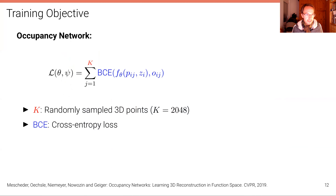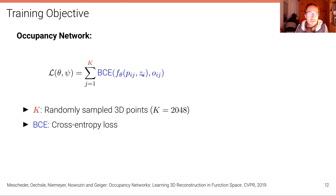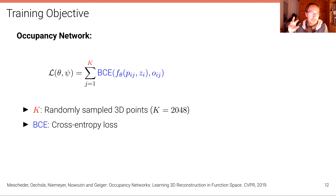Because this is a simple classification problem, the loss is a standard binary cross-entropy loss that compares the network's prediction for a latent condition C — the image code — and a particular 3D point P to the ground truth. This is supervised learning. We assume full supervision: we know for any point we could query in 3D space, sampled randomly, whether the ground truth occupancy is zero or one.